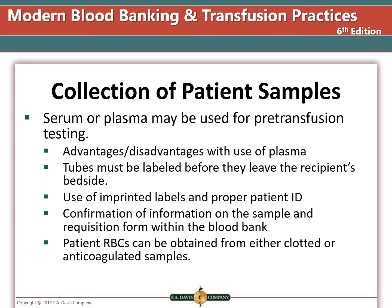Tubes must be labeled before they leave the patient's bedside. Use of imprinted labels and proper patient ID is critical for all laboratory samples. Confirmation of information on the sample and requisition form within the blood bank is critical to avoid mixing patients up. Patient red blood cells can be obtained from either clotted or anticoagulated samples for tube testing. You must follow the operator procedures for the type of sample required for the procedure you are using.